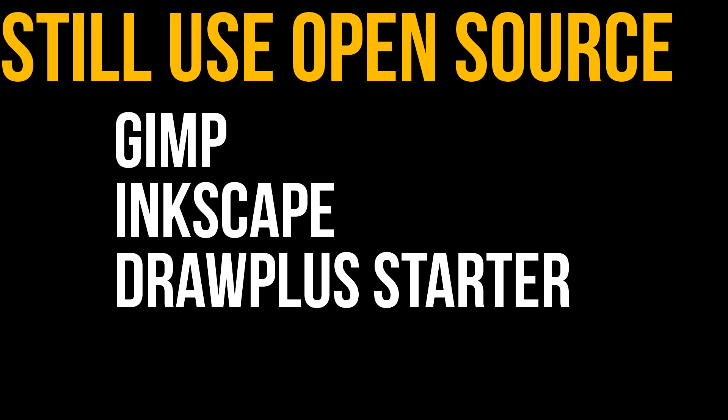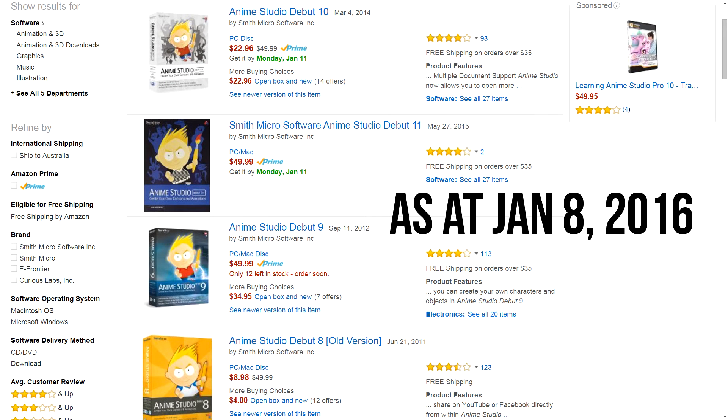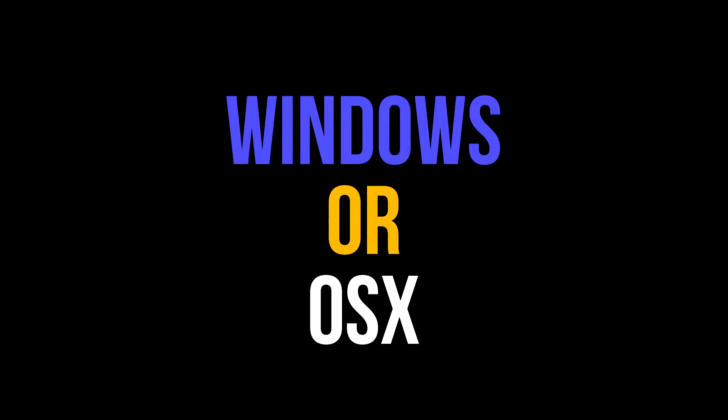All my character creation will still be done in open source software. Why Anime Studio 8.0 and not 11? Well, if I can make animations in 8.0, then you should be able to make animations in any version 8.0 or after. Looking on Amazon, I can see you can still buy many of the versions. I recommend going no lower than 8.0. What's great about Anime Studio is that it works on Windows and OS X.